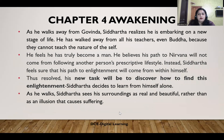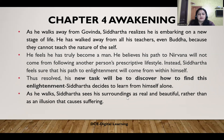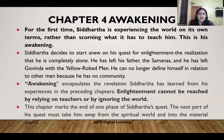By the time we come to the fourth chapter, titled 'Awakening,' Siddhartha, as he walks away from Govinda, realizes he is embarking on a new stage of life. He has walked away from all his teachers: first from his paternal house, then from the Samanas, and even from Lord Buddha, because they cannot teach the nature of the self. He believes his path to nirvana will not come from following another person's perspective or lifestyle. Siddhartha feels sure that his path to enlightenment will come from within himself. As he walks, Siddhartha sees his surroundings as real and beautiful rather than as an illusion that causes suffering.